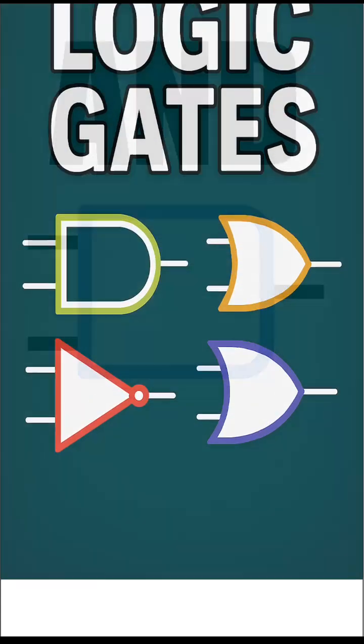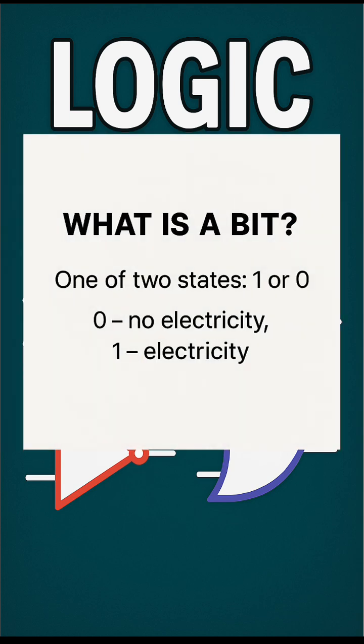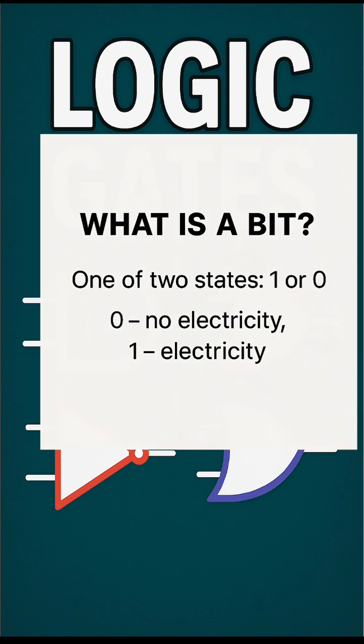AND gates. An AND gate is a type of logic gate, which is something in a computer that takes in bits and gives out bits to regulate the flow of electricity. What is a bit? A bit is simply one of two states, or in our case, zero being no electricity and one being electricity.